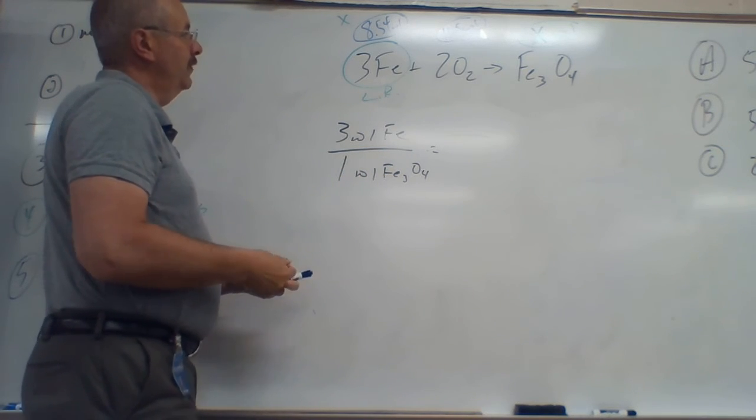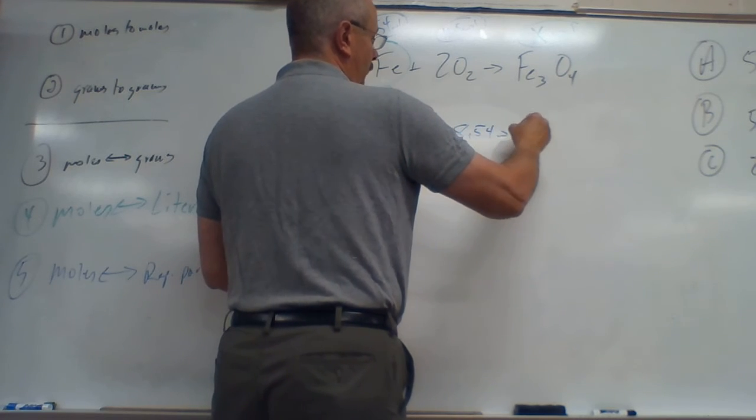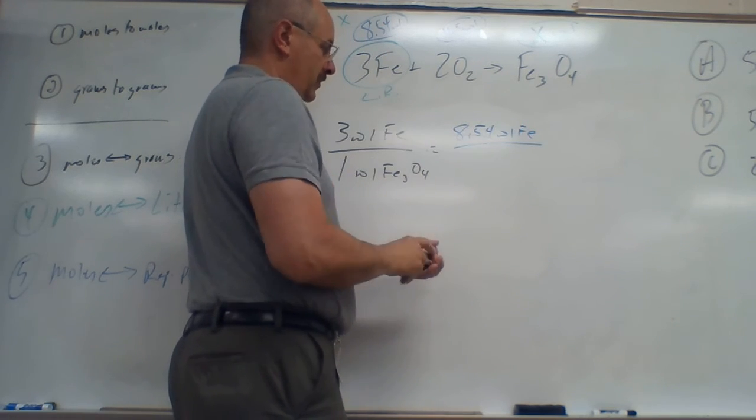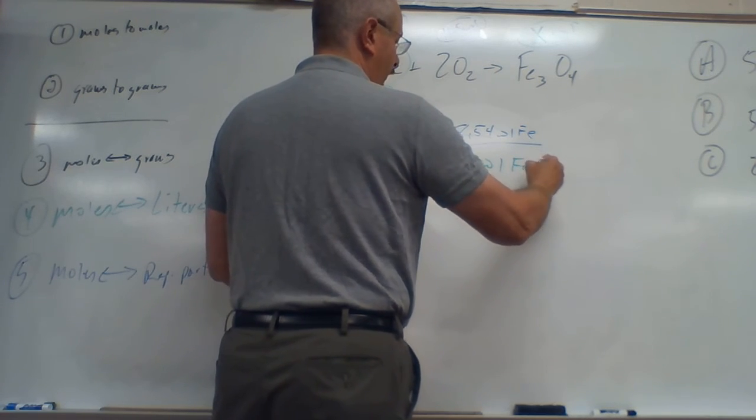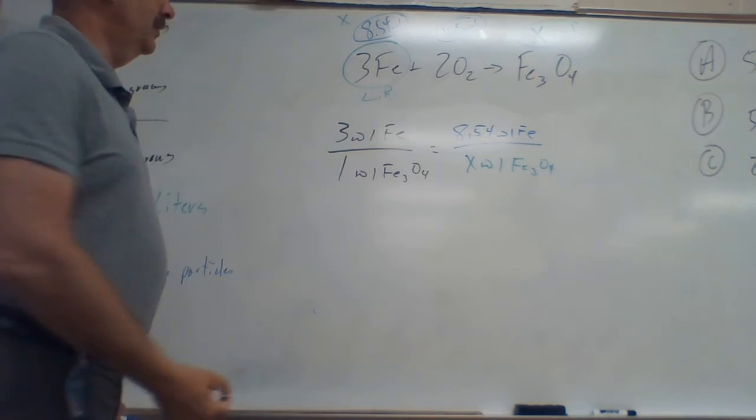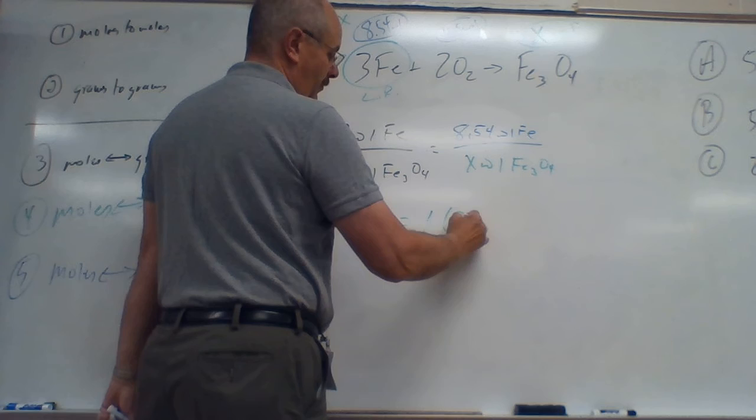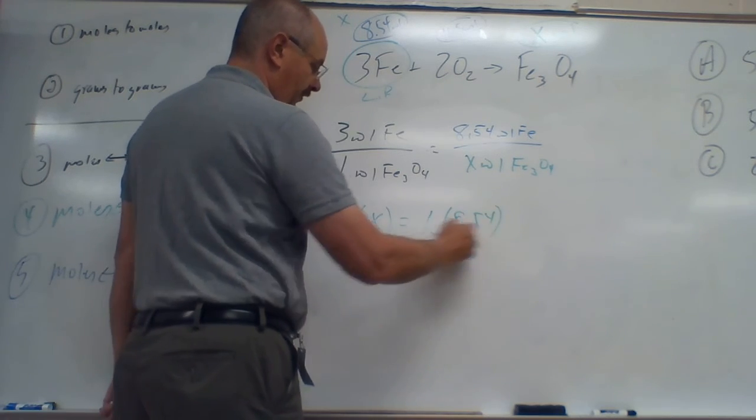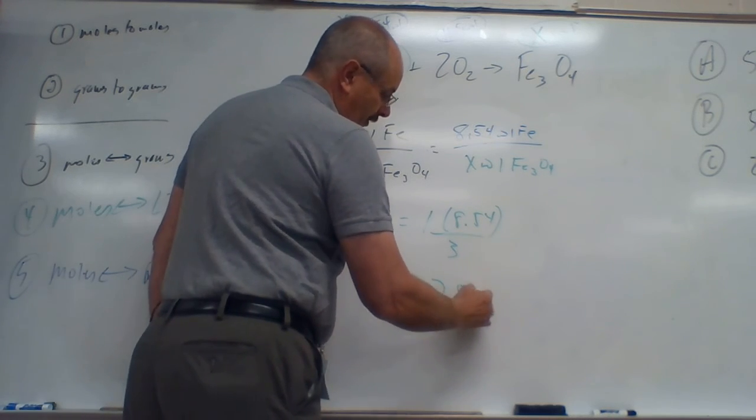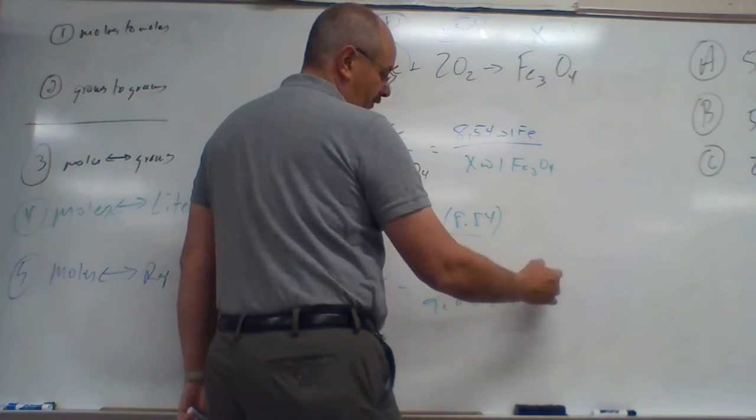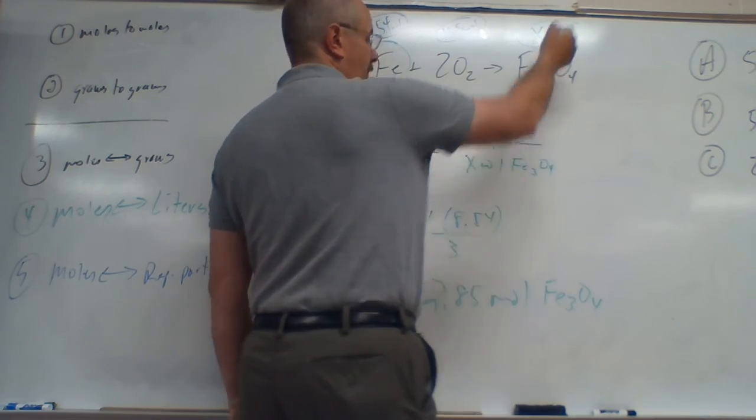So then I have 8.54 moles of Fe and we're going to try and find out x moles of Fe₃O₄. So cross multiply and solve: 3 times x equals 1 times 8.54. Divided by 3 on both sides and x ends up equaling 2.85.